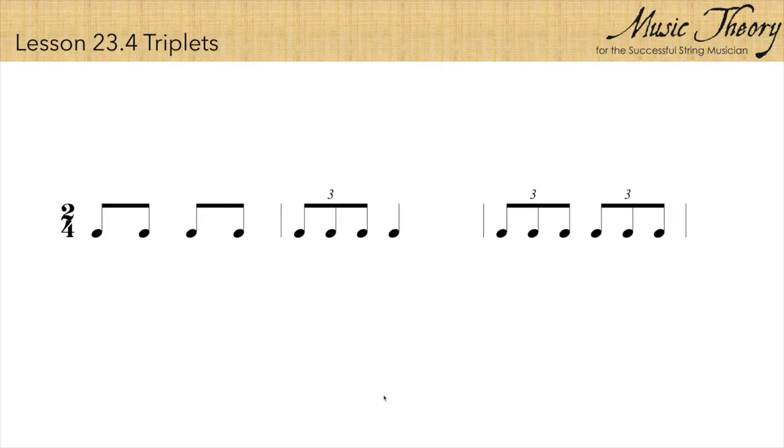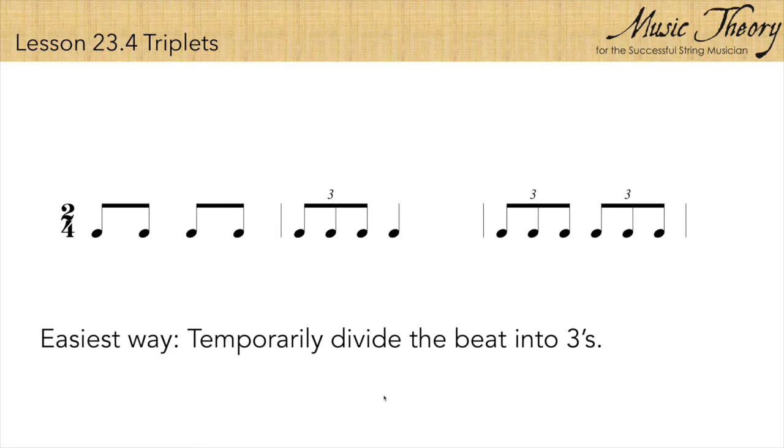Counting and performing triplets can be tricky. The easiest way is to temporarily divide the triplet beat into threes. When counting this rhythm, we would count one and two and one and a two and one and a two and a while performing the rhythm.